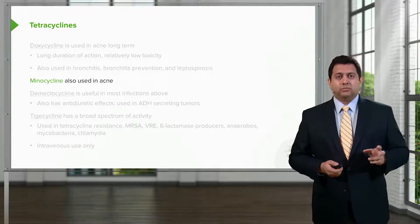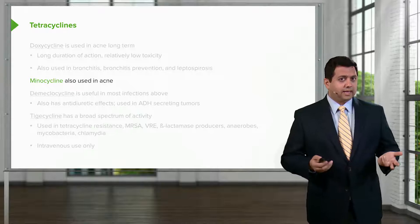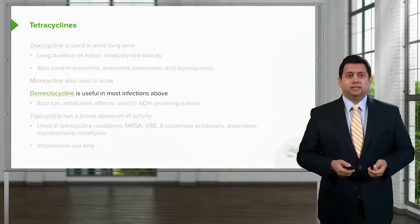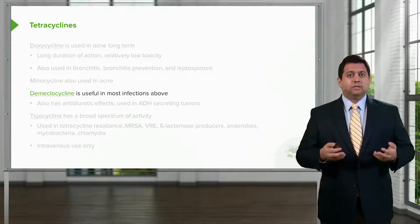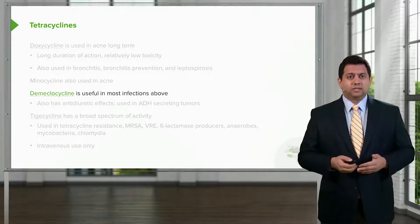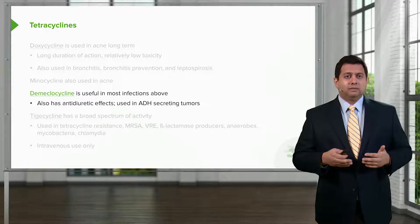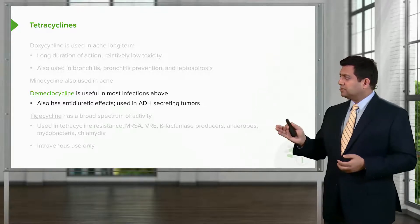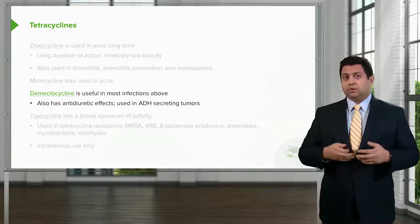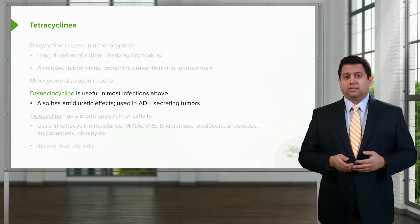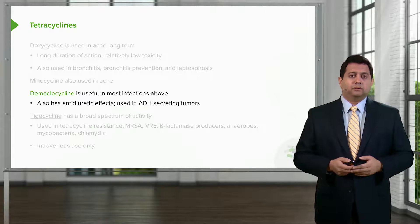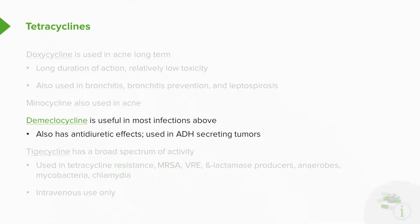Minocycline is used almost exclusively in acne. Demeclocycline is useful in most infectious diseases and also has an anti-diuretic effect. If you go back to the hormone lectures and the adrenal lectures, you'll see that we discuss Demeclocycline in anti-diuretic hormone-secreting tumors.